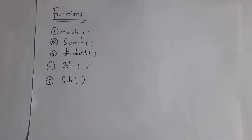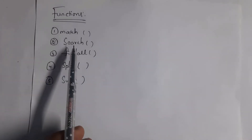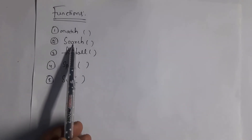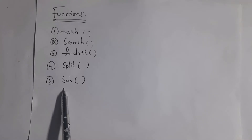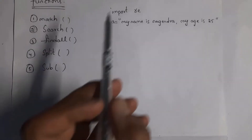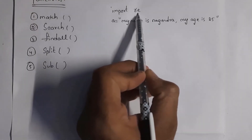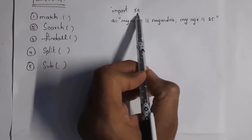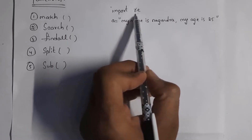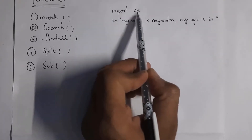These are the various functions we use in regular expressions: first is the match function, second is the search function, third is find all, fourth is split, and fifth is sub — where sub stands for substitute. I will explain each of them with examples. First, write 'import re' — where 're' is a package and also considered as a module.